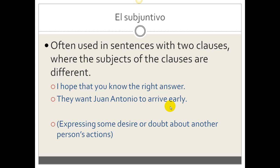So in these contexts, we would see that the subject is expressing some desire or doubt about another person's actions. And those are a couple uses of the subjunctive: to express desire or doubt.